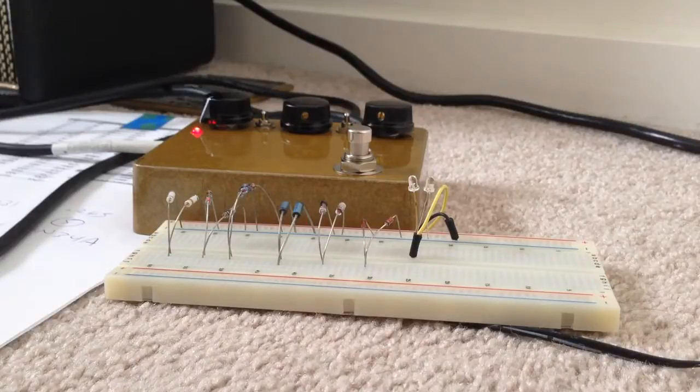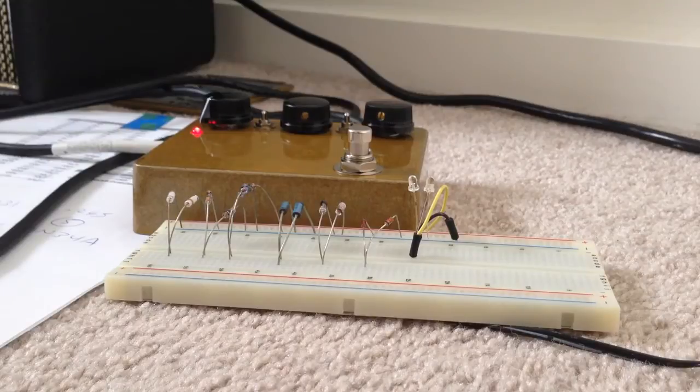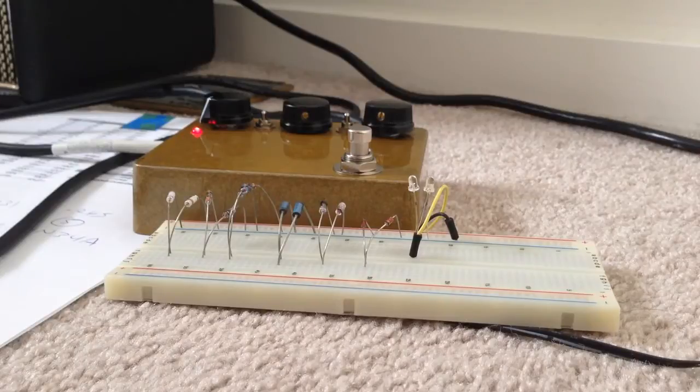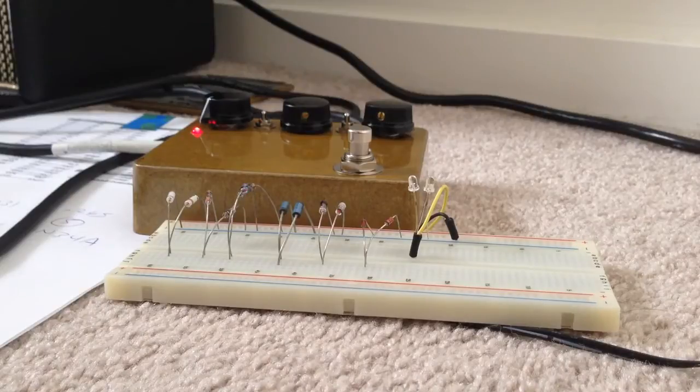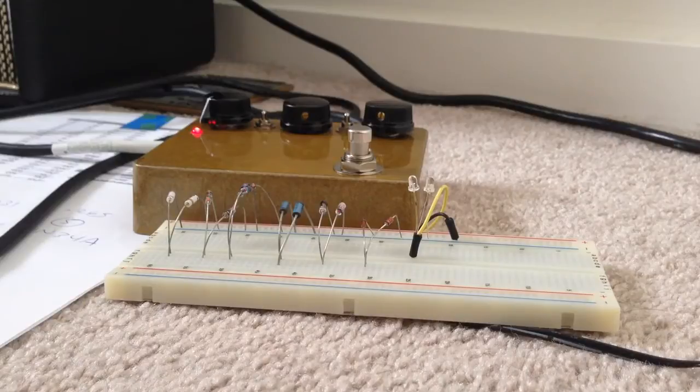But you can hear the magic of the Klon. You know, the cool thing about the Klon is it will sort of amplify your signal, give it some thickness and clarity, but it won't really color the sound. So what you're just getting is a louder version of your signal, beefier, and with a lot more clarity, but it's not really coloring your sound.